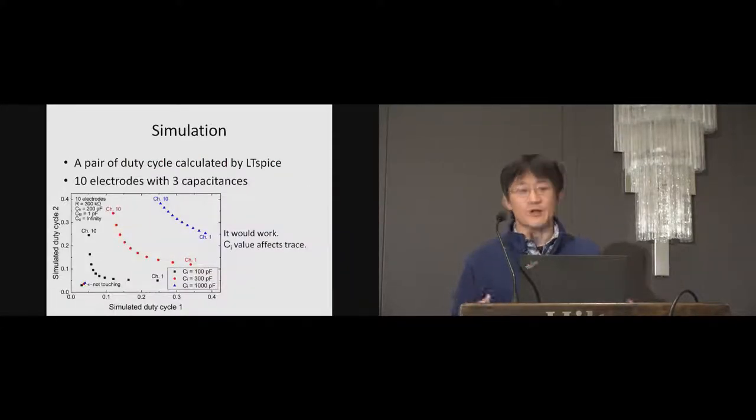We had a simulation. This graph shows the result when 10 electrodes are used with 3 different capacitors. The capacitance is measured as duty cycle in the circuit, so X axis and Y axis represents the duty cycle. The pair of capacitances differs according to the touched electrode. The value of CI affects the trace, but wide range of CI is acceptable. So the selection of CI is not severe.